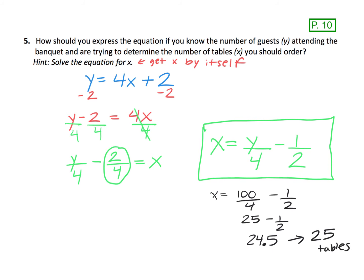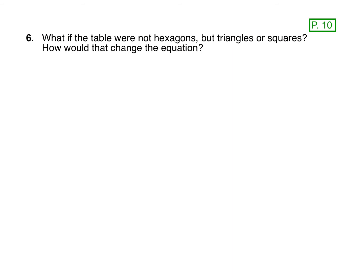Solving the equation for x lets us solve some different types of questions. Let's extend this problem now to looking at a different shape of table. What if instead of hexagon tables, you have triangle tables? For a triangle table, if we have just one table, you can have three people at the seats. If you push two together, they go end to end, so two tables looks like it is four seats. Let's try three tables — putting three triangles together gives one, two, three, four, five seats.